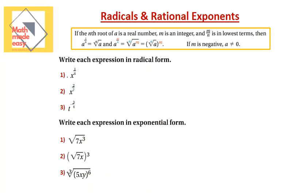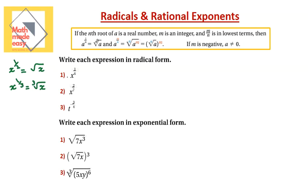For the first group of examples, let's go through the rule. The rule says if the nth root of a is a real number — we work only with real numbers when it comes to radicals and exponents — m is an integer, a is a real number, and m over n is in lowest terms (simplest form). Then a to the power of 1 over n is equal to the nth root of a. So x to the power of half equals the square root of x, and x to the power of 1 over 3 equals the cubic root of x.